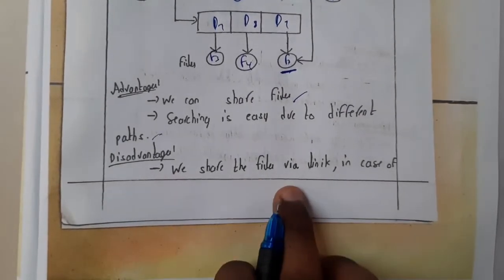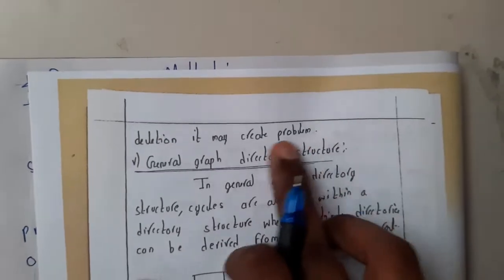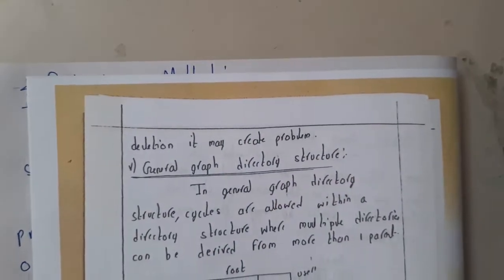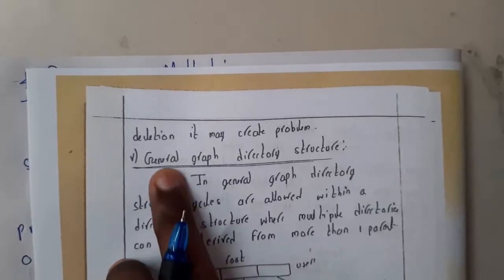What will be the disadvantages? We share the file via links. In case of any deletion, it creates a problem because we need to remove all those branches and all those wires.